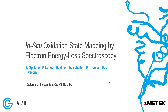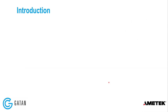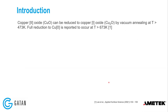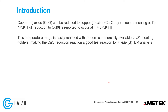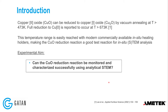This talk covers in-situ oxidation state mapping by electron energy loss spectroscopy. Copper oxide can be reduced to copper(I) oxide by vacuum annealing at temperatures greater than 473 Kelvin, and full reduction to copper(0) can happen above 673 Kelvin. This temperature range is easily reached with in-situ heating holders, making the copper reduction reaction a good test reaction for in-situ STEM analysis. The aim is to answer whether the copper oxide reduction reaction can be monitored and characterized successfully using analytical STEM.